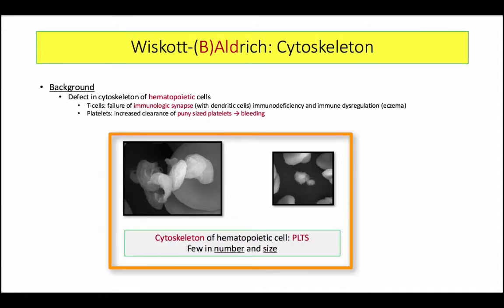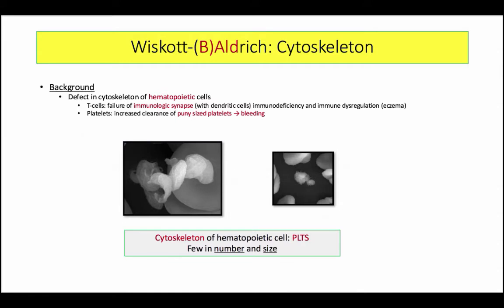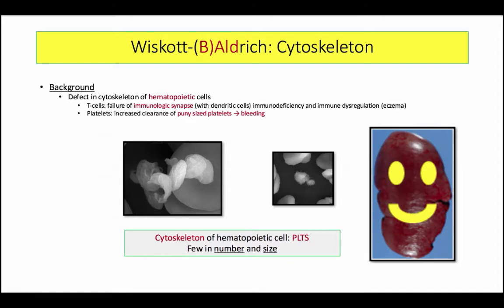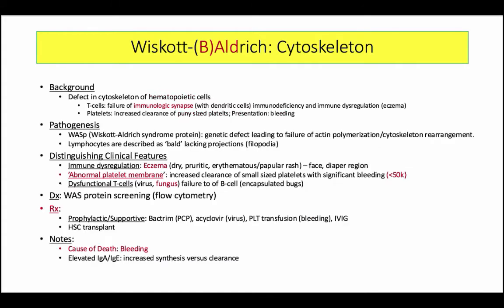This is a big ticket item. The cytoskeleton defect affects cells of hematopoietic origin, including platelets — they too have an abnormal cytoskeleton. The spleen clears defective platelets via splenic macrophages, causing significant thrombocytopenia. Although we are presenting immunodeficiencies, the main cause of death in these patients is bleeding. The platelet count is down, and due to the cytoskeleton defect, the platelets are described as being small in size. Cytoskeleton failure leads to eczema, low platelets, and the full array of infections — viral, fungal, bacterial, and protozoal.